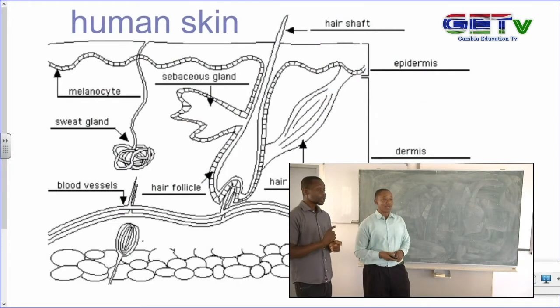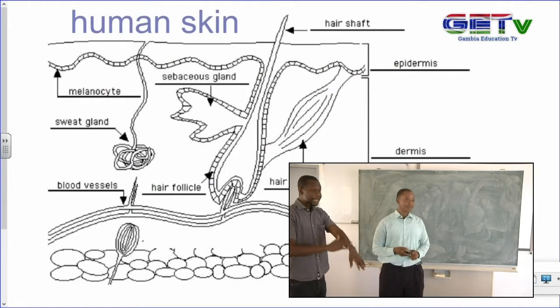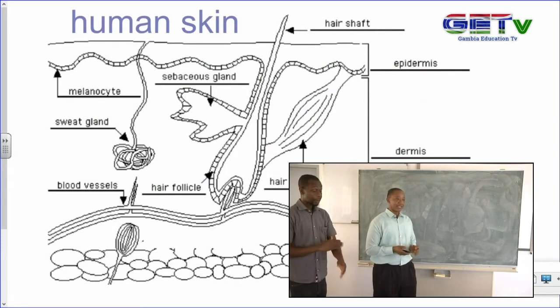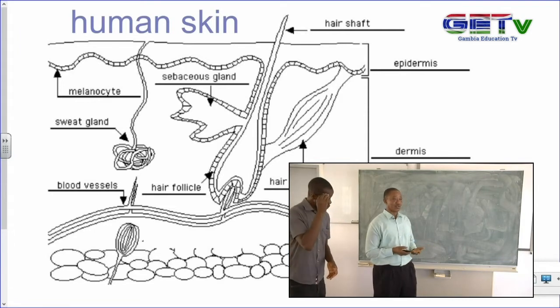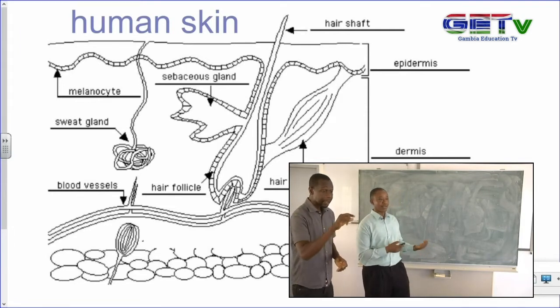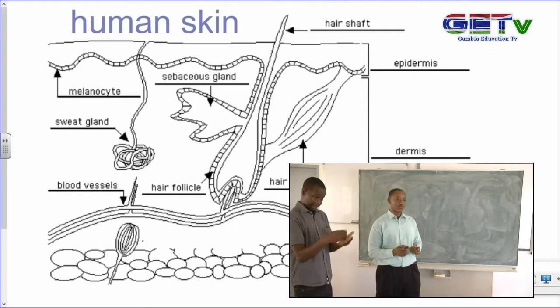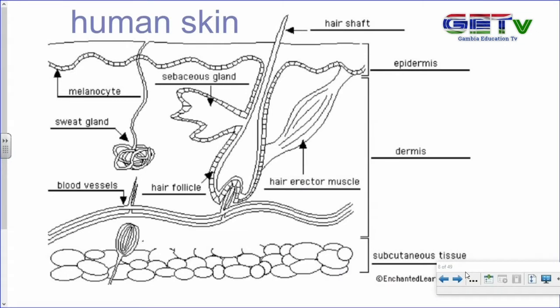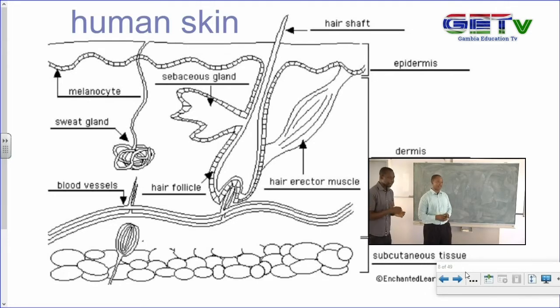Finally, we want to look at the human skin. Remember, you should learn to name the parts. Usually they will bring a diagram for you, so your part is to make sure you understand the parts, name them, and state their functions. We describe the human skin as being made up of three parts: the epidermis, the dermis, and the fat layer, often called subcutaneous tissue.